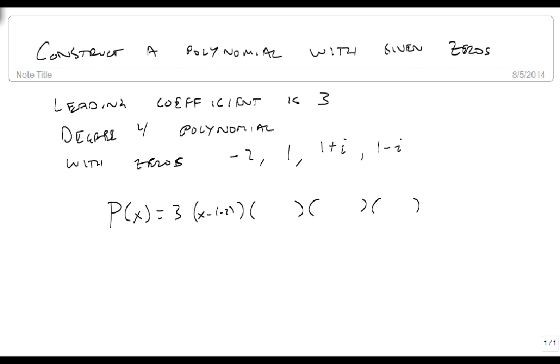So it's x minus negative 2, x minus 1, x minus 1 plus i in parentheses, and x minus 1 minus i in parentheses.